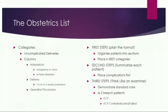Let's focus on the obstetrics list. If you look at the obstetrics list, the top column is uncomplicated deliveries. This column is very important because anyone who comes in at 39 weeks and uncomplicated goes into this column. If they're a term delivery, they go into this uncomplicated delivery number.